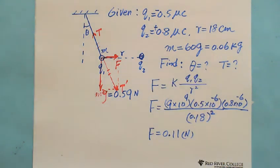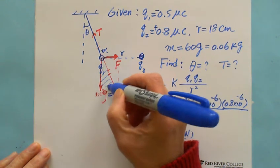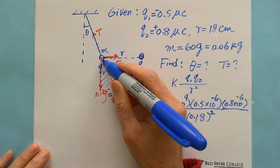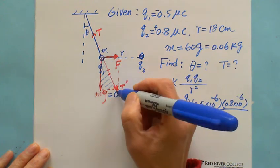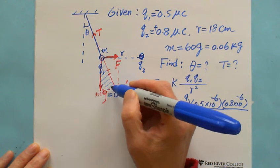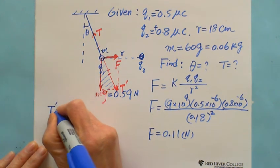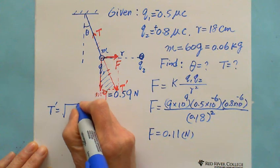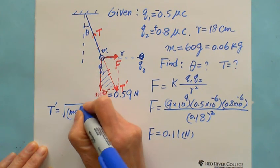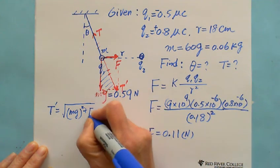So we label this as T prime. In this triangle, the small triangle here, you can see this is F and this is mg. So T prime equals the square root of mg squared plus F squared.